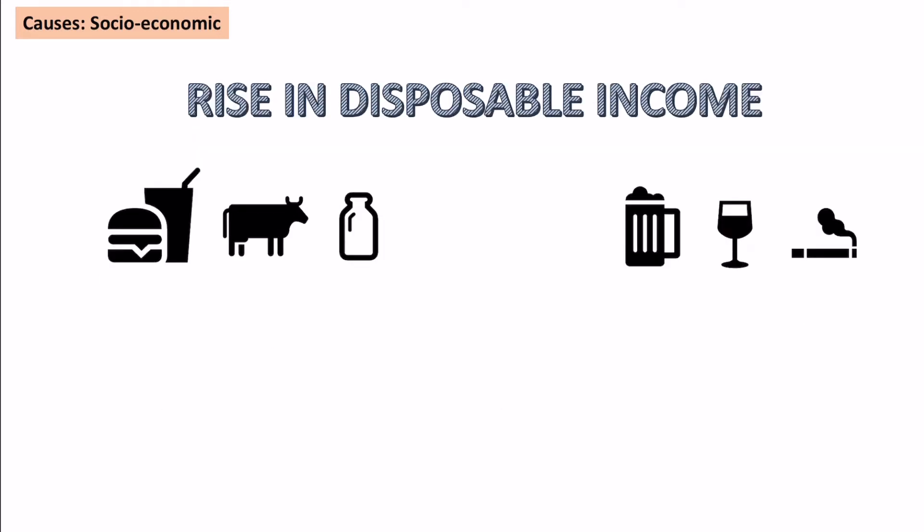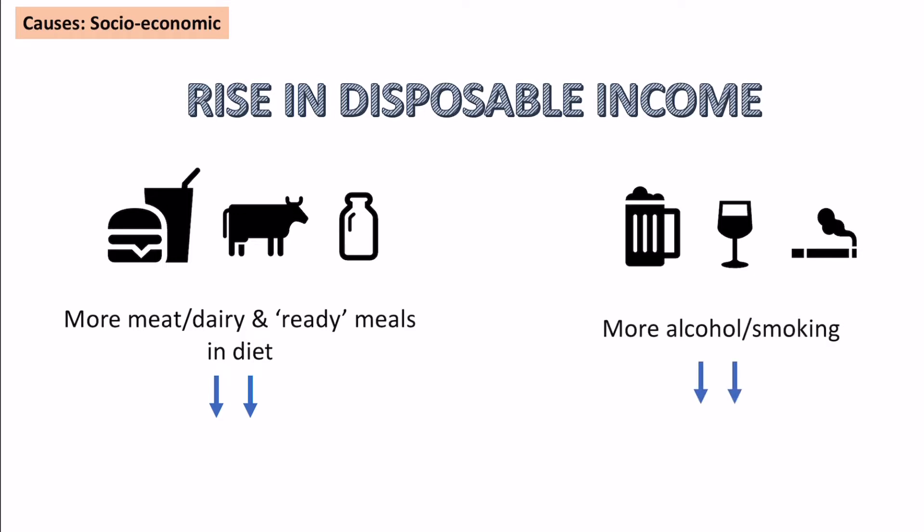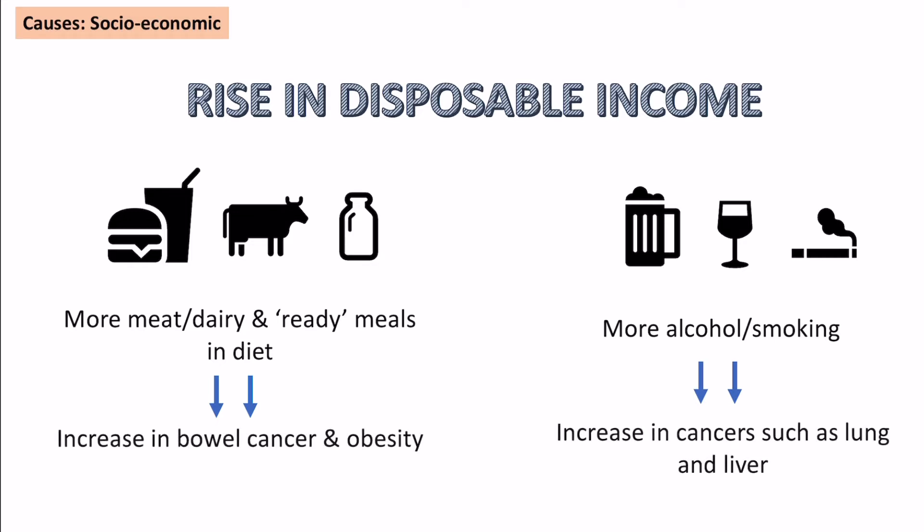We can see a link between cancer and a rise in disposable income. When a country becomes wealthier, people can spend more money on things like meat and dairy, ready meals, takeaways, and foods with high saturated fats. There's also more money spent on alcohol and smoking, which leads to specific diseases like bowel cancer and obesity from diet, and increased lung and liver cancers from smoking and drinking more.